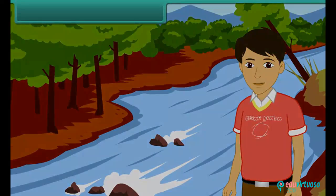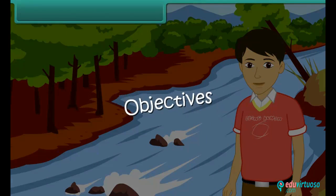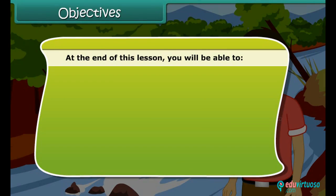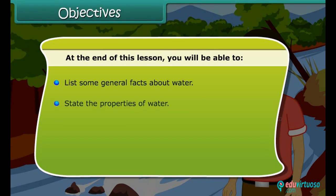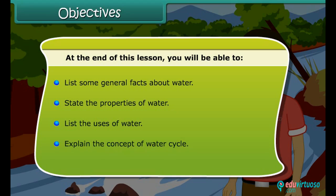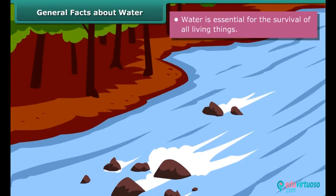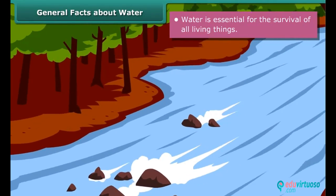Objectives: at the end of this lesson you will be able to list some general facts about water, state the properties of water, list the uses of water, and explain the concept of the water cycle. Water is essential for the survival of all living things.